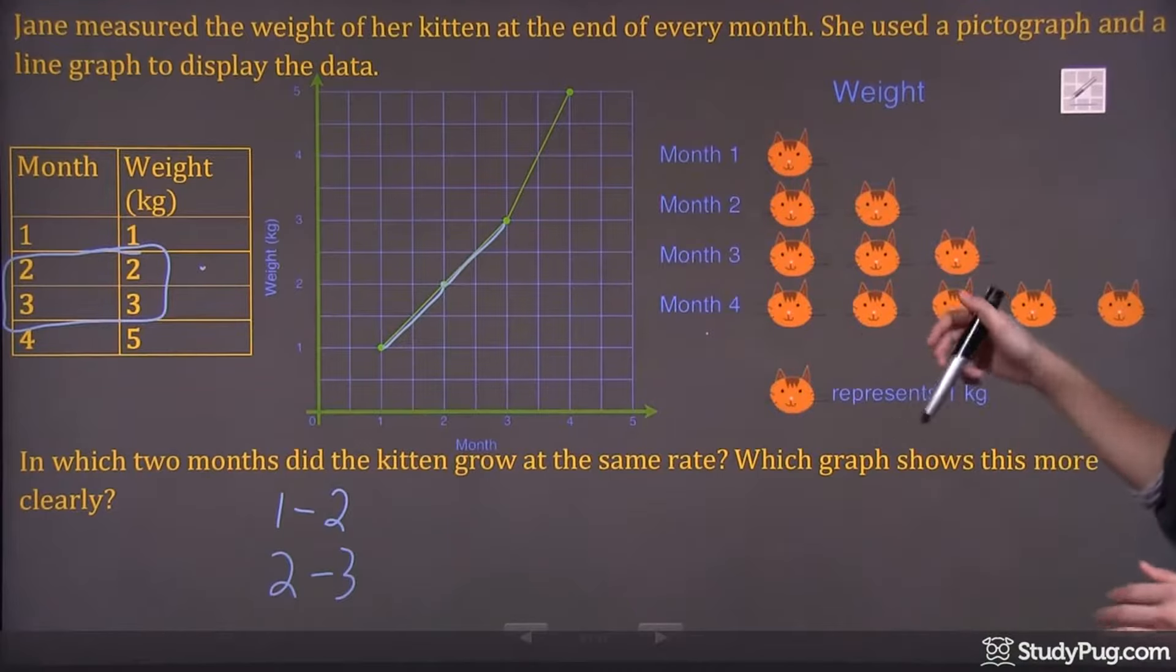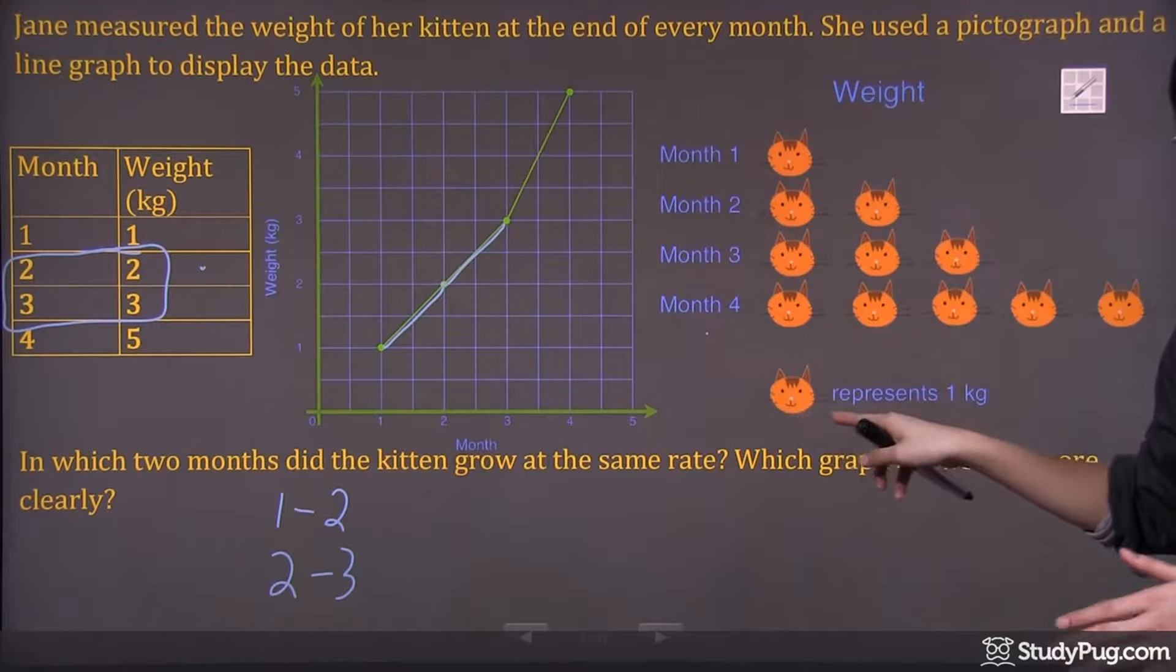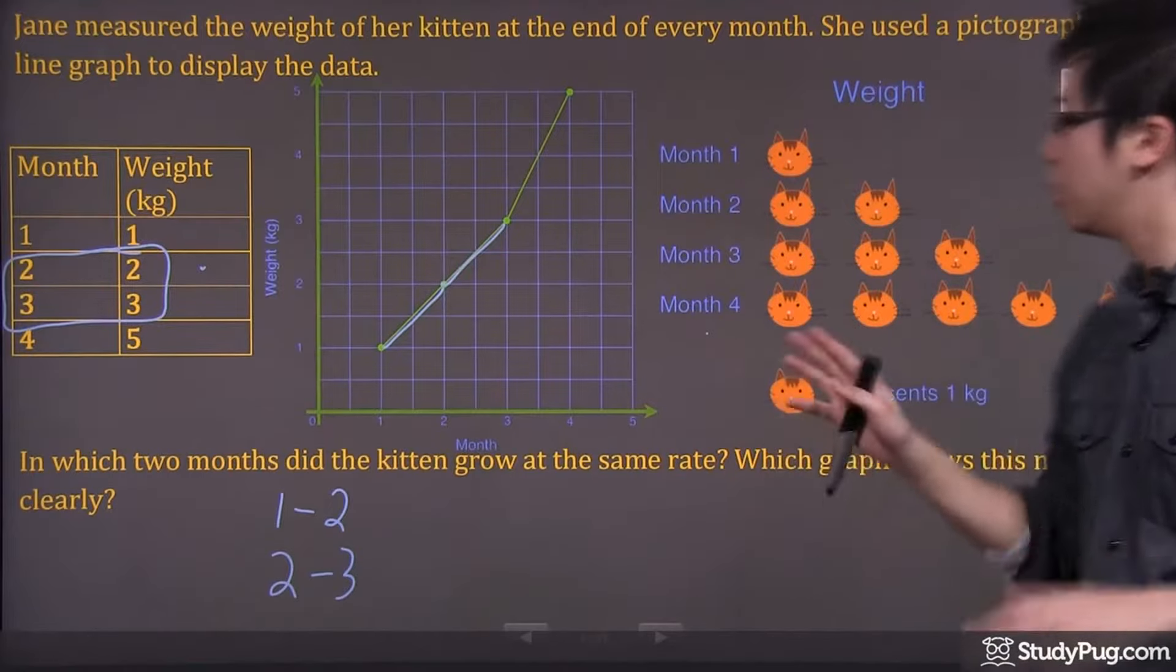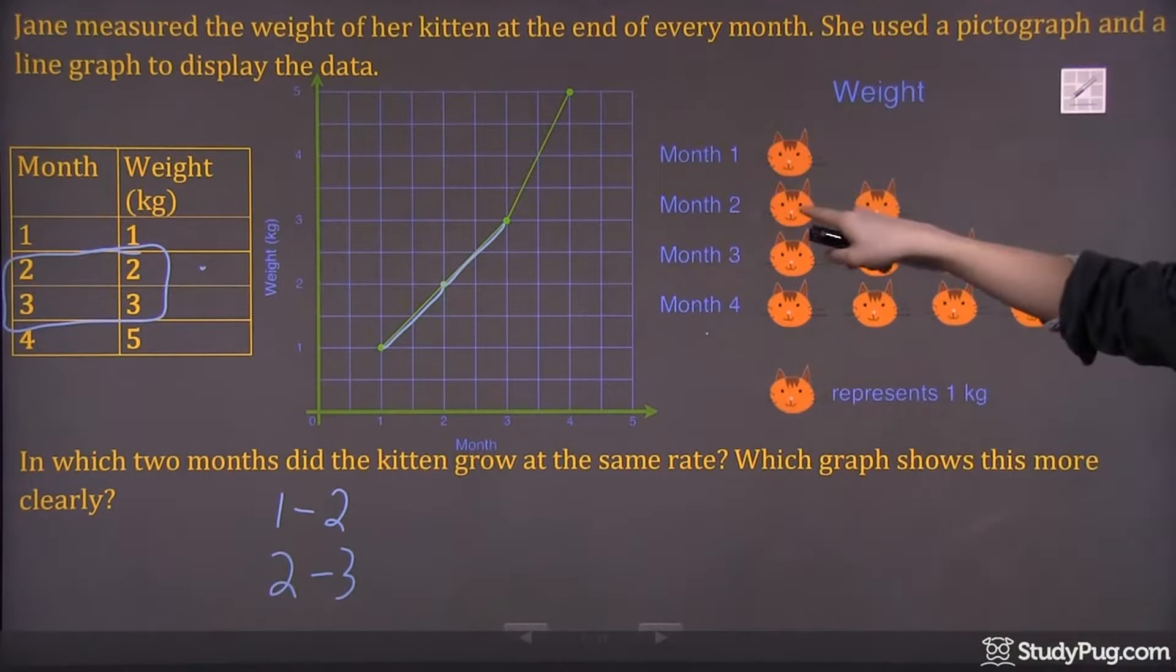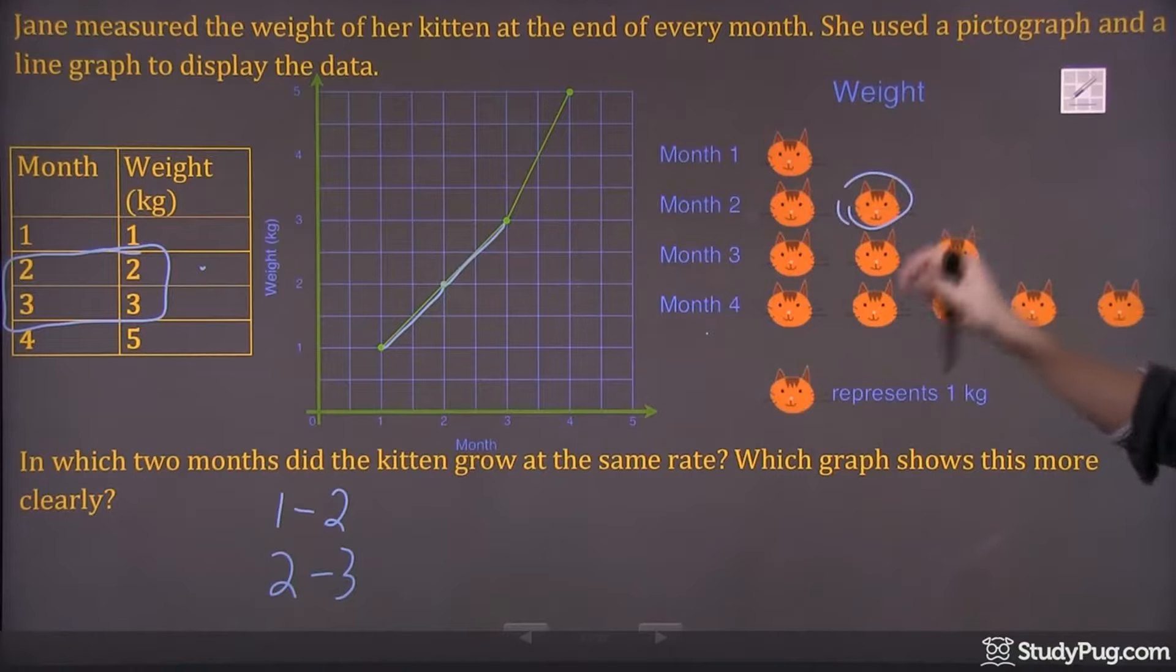Same thing over here, you can see that every little cat's head is one kilogram. From month one to month two, you got one extra one. From two to three, you got one more extra. That's the same growth rate right there, one kilogram, and the next month another one kilogram.